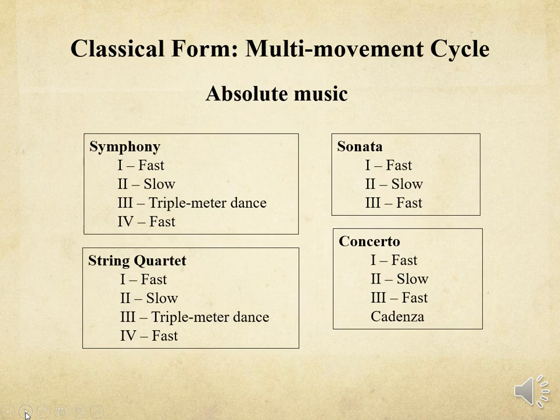In this chart, you'll notice that symphonies and string quartets are usually four-movement works. A sonata or concerto is usually a three-movement work, with the movements fast, slow, fast. In addition, you'll notice that concertos also have a cadenza.